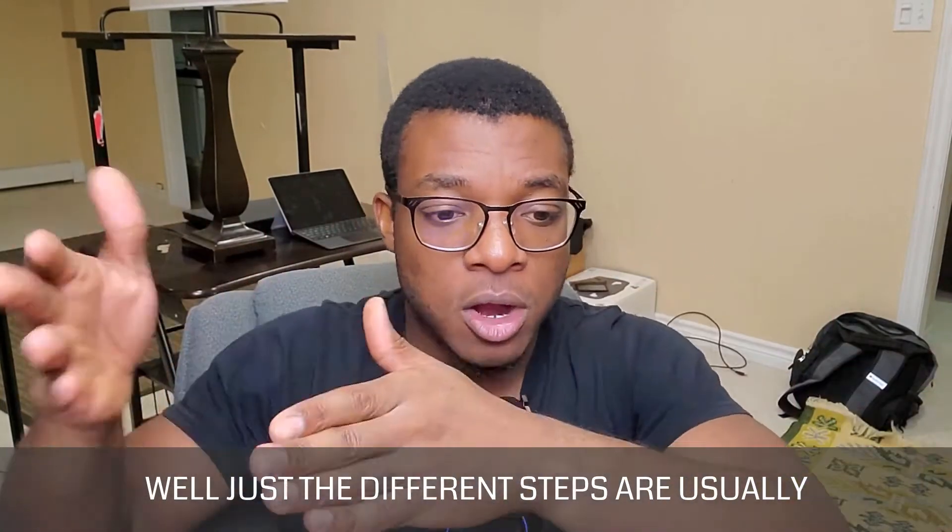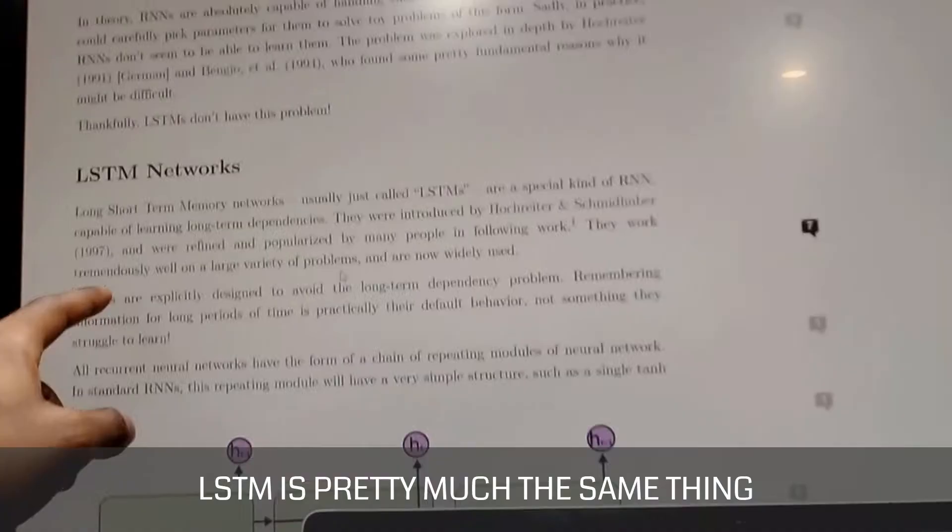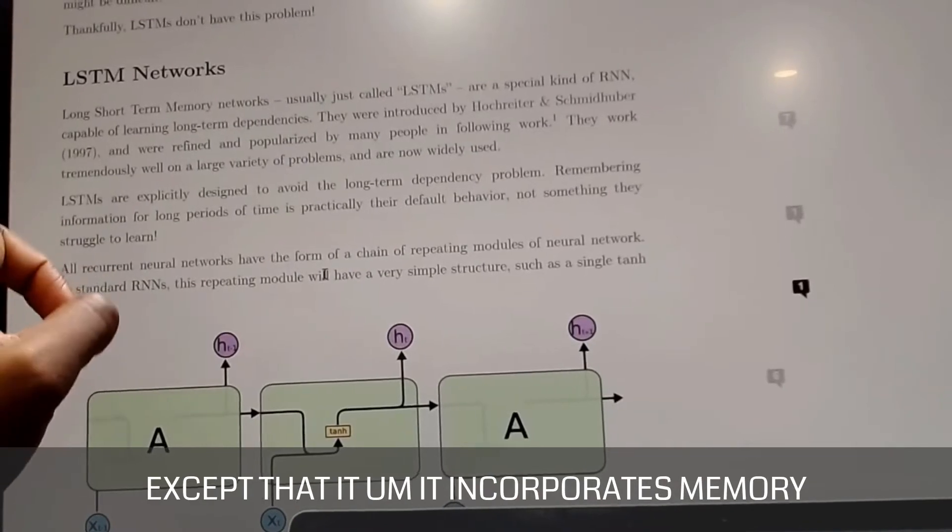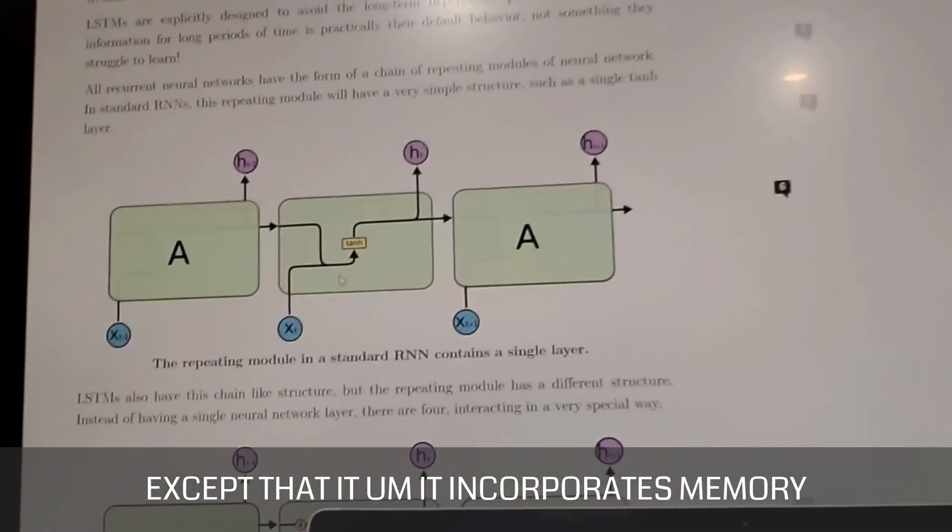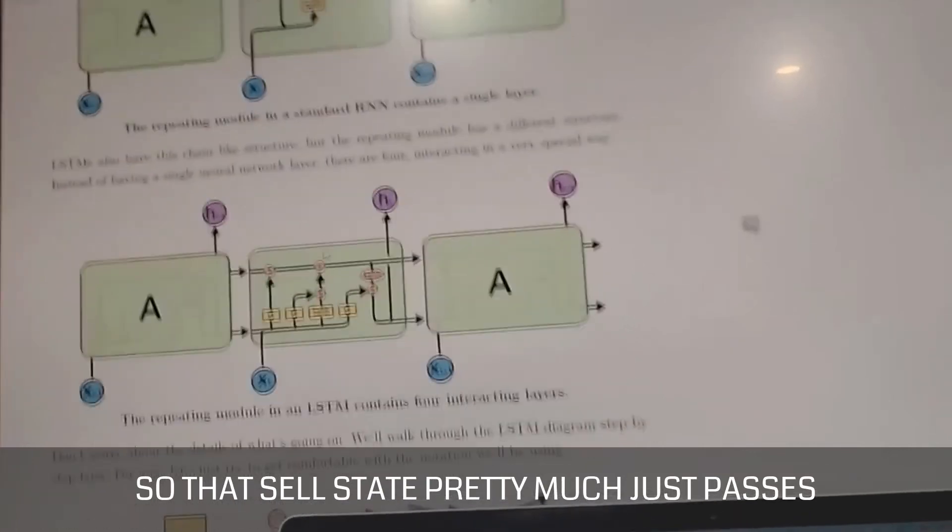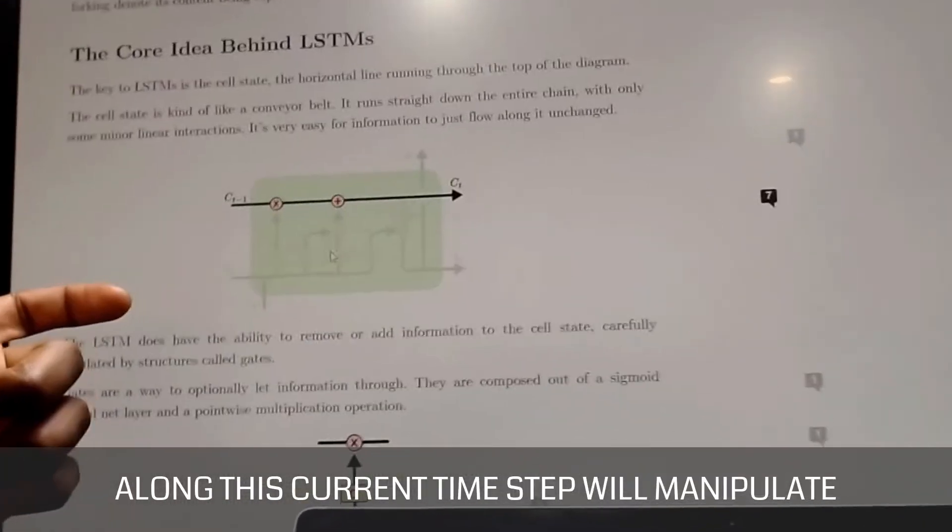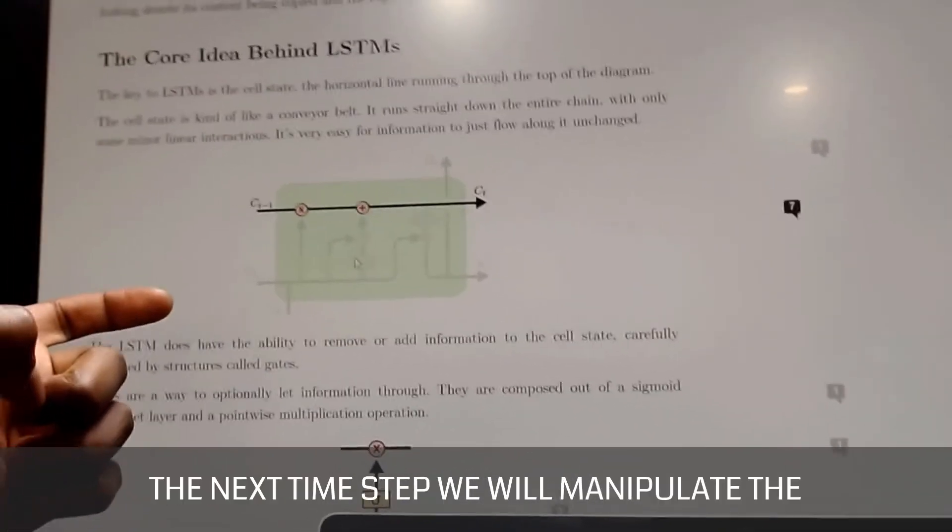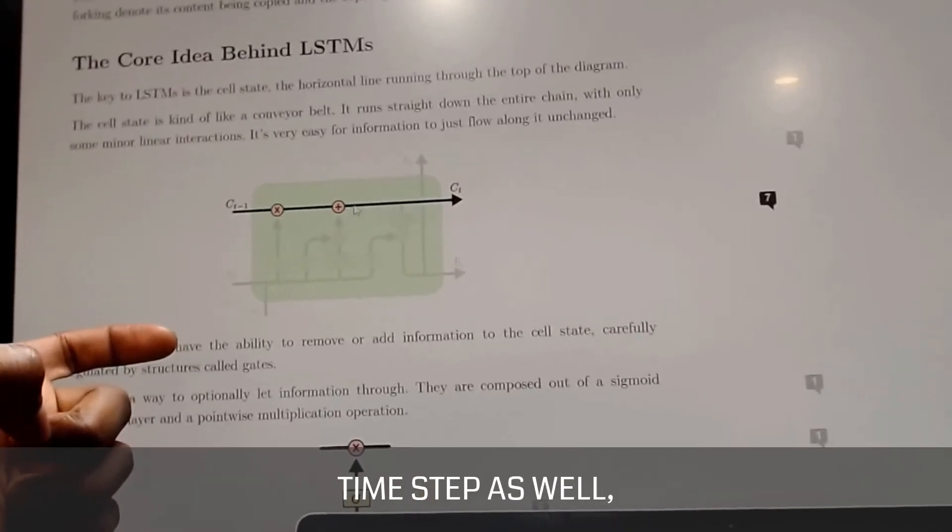The different steps are usually just called time steps. So for LSTM, it's pretty much the same thing, except that it incorporates a memory called the cell state. So that cell state pretty much just passes along. This current time step will manipulate the cell state. The next time step will manipulate the time step as well.